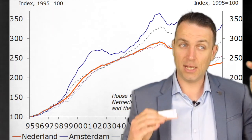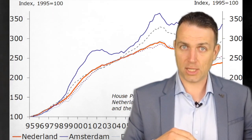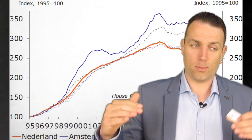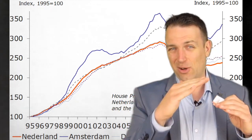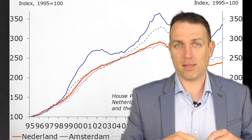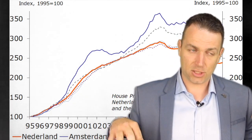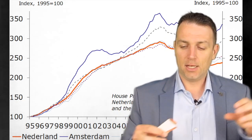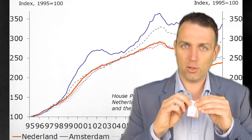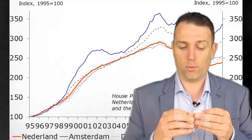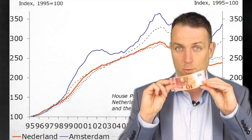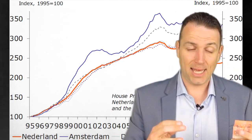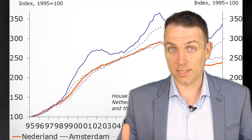Fixed assets like real estate, especially in sought-after areas like Amsterdam, show you what can really happen to the economy and what should be happening. The differentiation shows what should happen versus what unfortunately nobody wants to look at. When you look at the averages it seems okay, but when you separate them you see the very bad side. I would say that the value of the euro is one quarter of what it was 20 years ago. The situation will be only worse in the future.